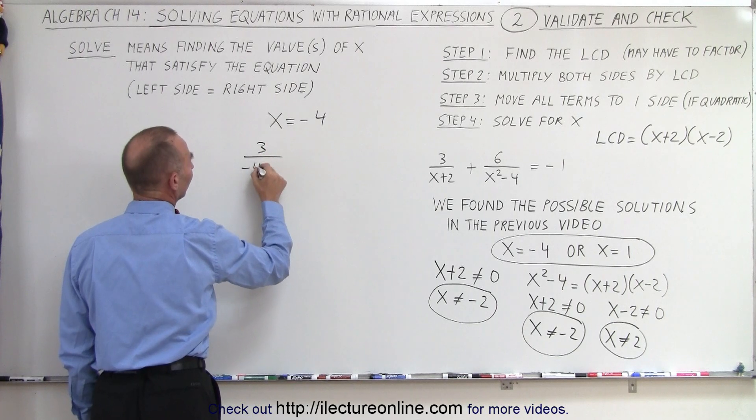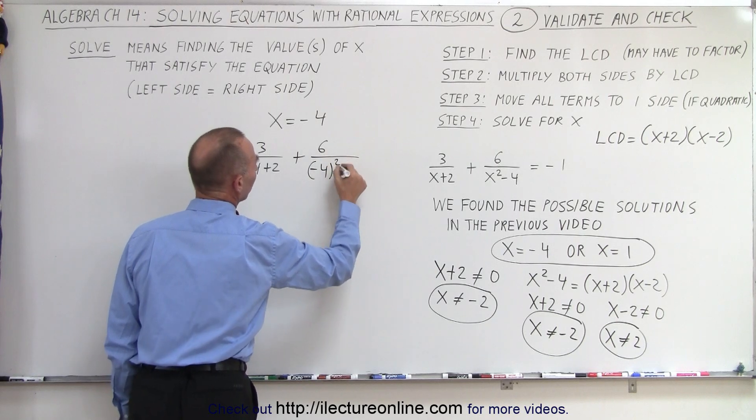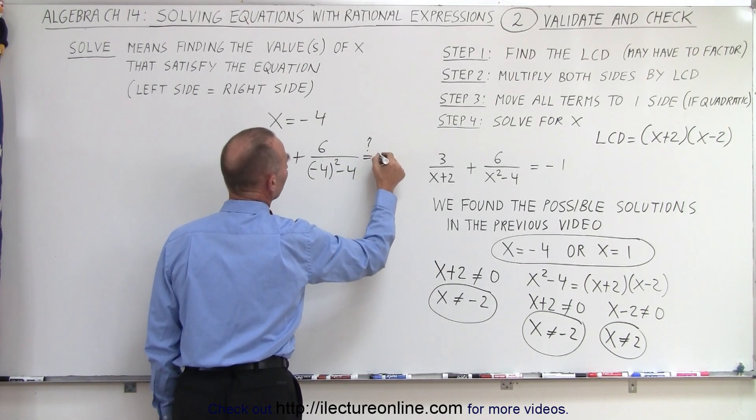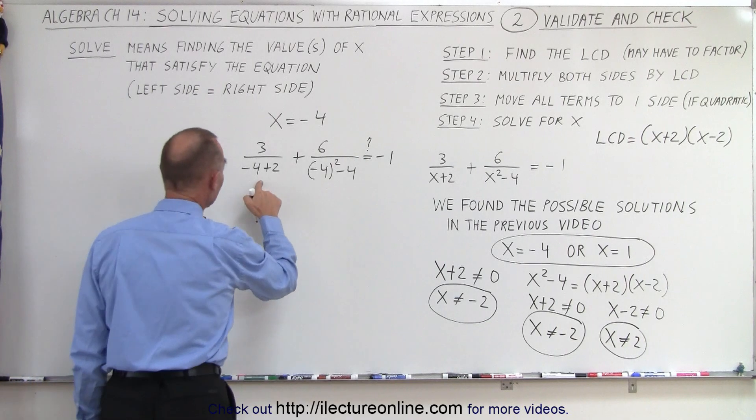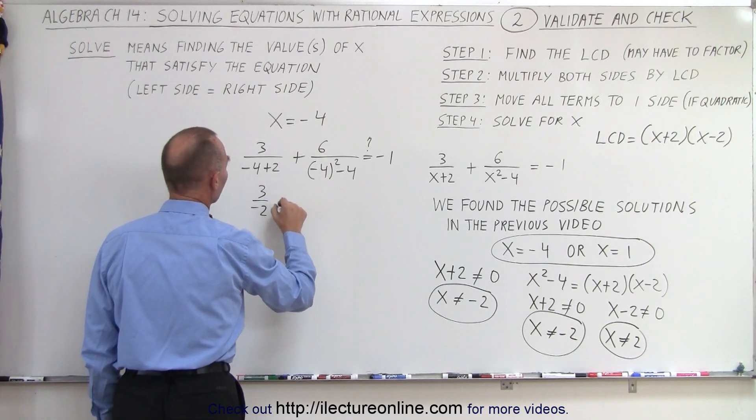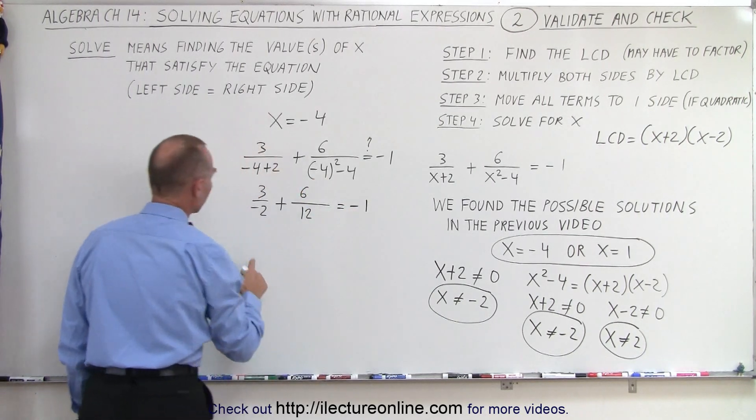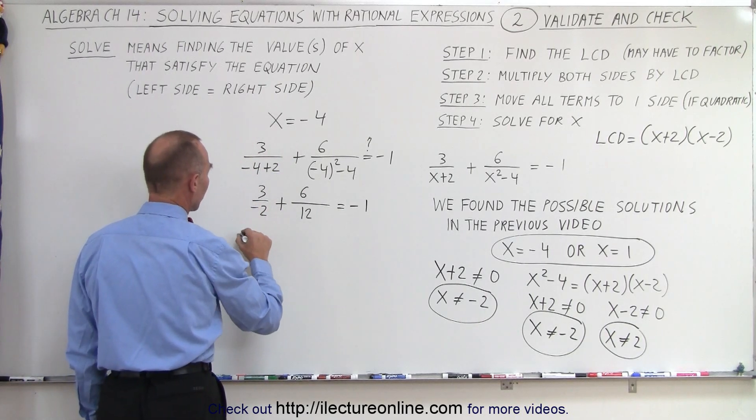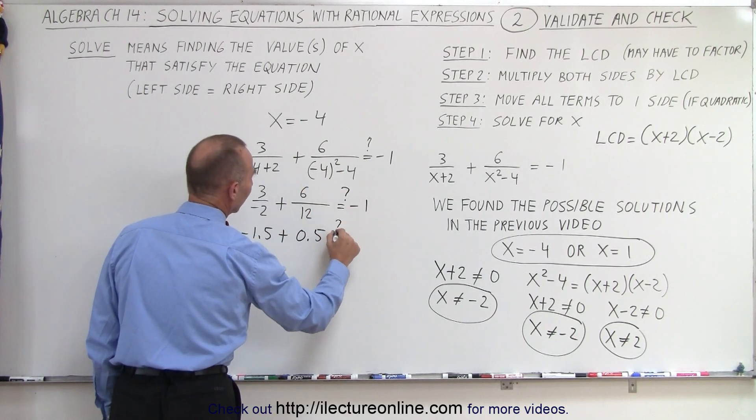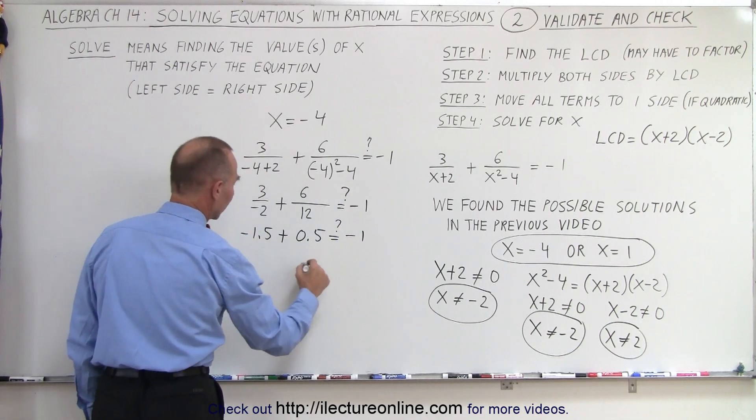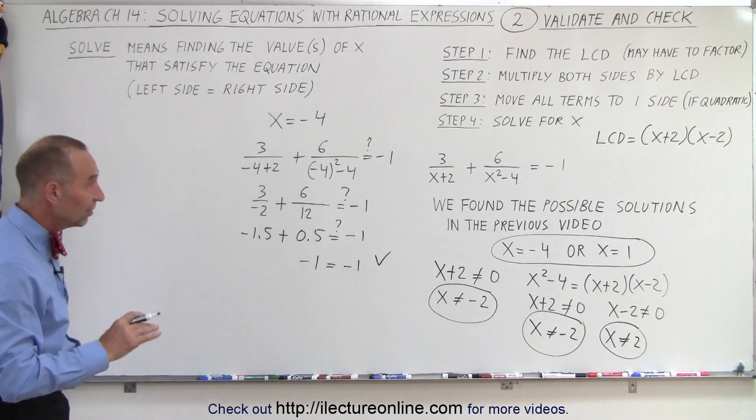We're going to plug that in. We get 3 divided by negative 4 plus 2 plus 6 divided by negative 4 quantity squared minus 4, and that should equal negative 1. Here we have 3 divided by negative 2 plus 6 divided by 16 minus 4, which is 12, equals negative 1. Negative 3 over 2, that would be minus 1.5, plus 6 over 12 is 0.5. When we add these together, we get negative 1 equals negative 1. So we can see that x equal negative 4 is indeed a valid solution.